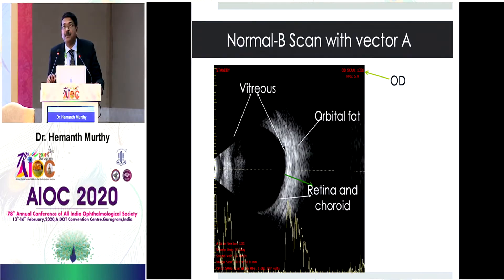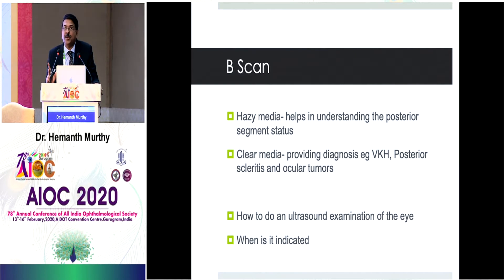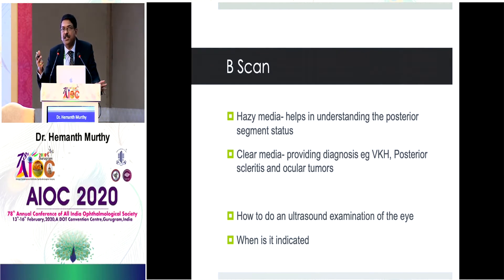Looking at a normal B-scan, the echolucent area is the vitreous. Then there is the retinochoroid layer of high reflectivity, followed by orbital fat. Ultrasound is generally done in a hazy media to understand the status of the posterior segment, but there are certain indications in clear media — especially in inflammatory conditions like VKH, posterior scleritis, and ocular tumors. You need to differentiate when to do ultrasound in clear media versus hazy media.